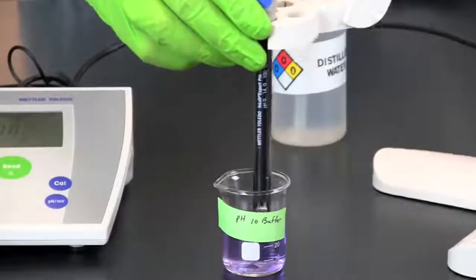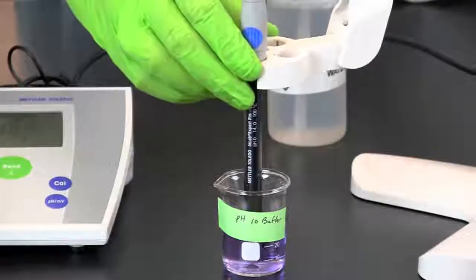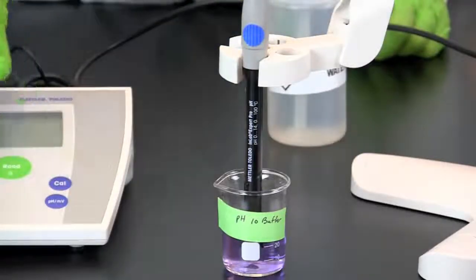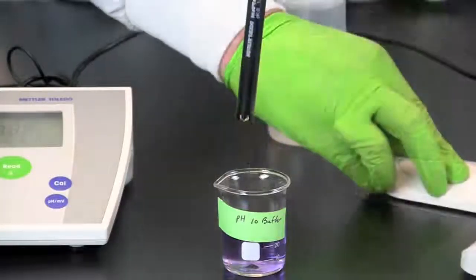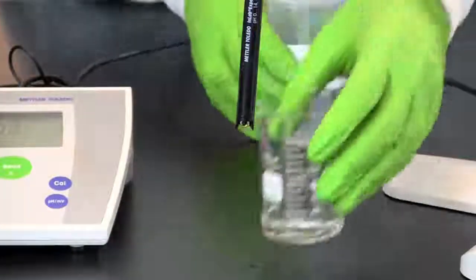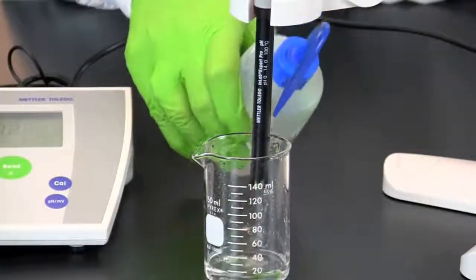You will then calibrate the final standard with a pH of 10. When the pH 10 standard has been calibrated, rinse off the electrode with distilled water.